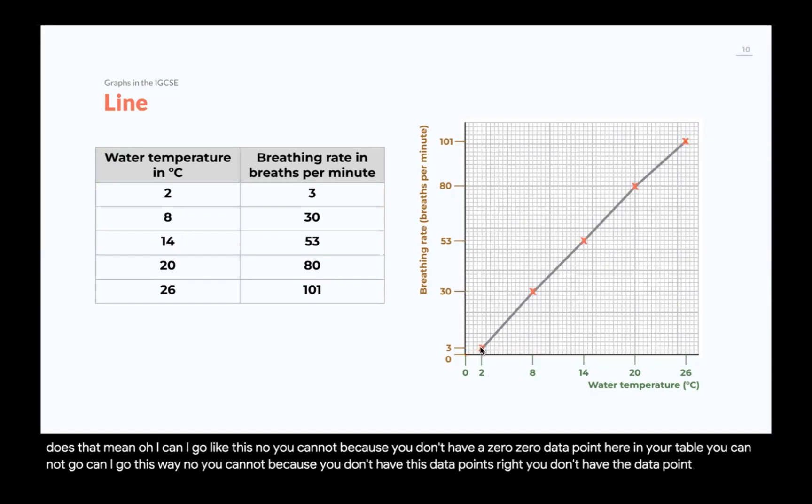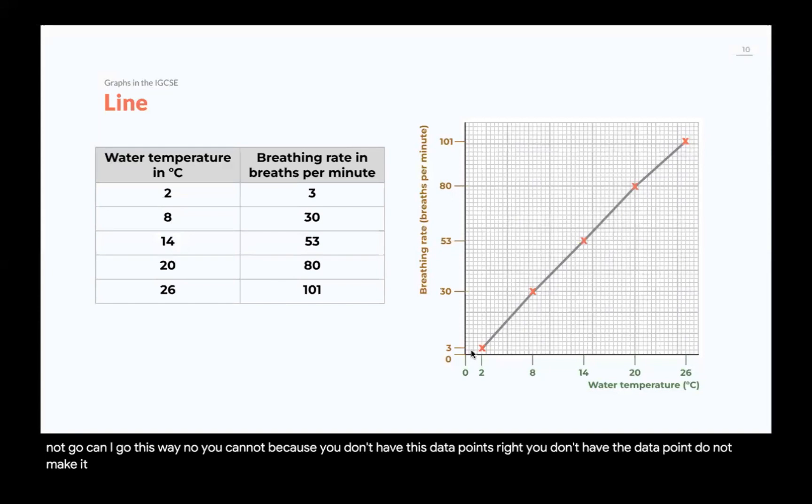You cannot go, can I go this way? No, you cannot because you don't have these data points, right? You don't have the data points. Do not make it fit 0 because it looks nice. It doesn't. It actually does not. It actually makes you miss the line points here, the line mark. So, don't do this. Do not extrapolate.